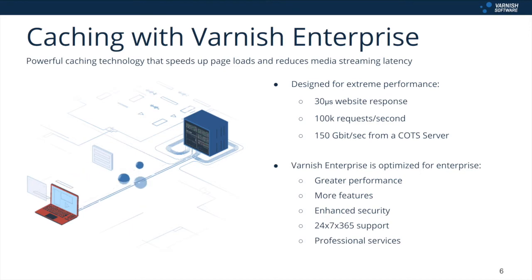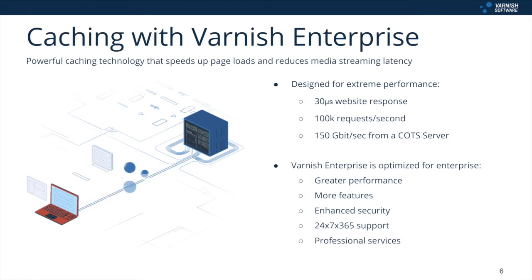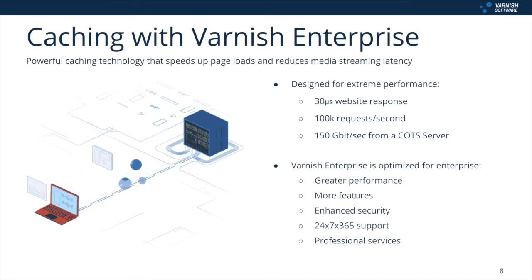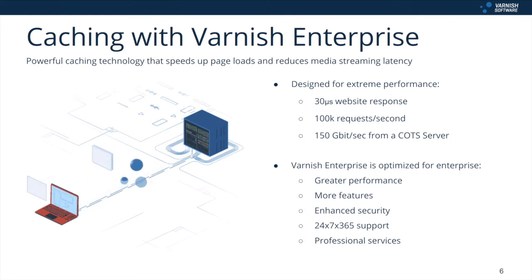Varnish Enterprise is designed for extreme performance — sub-millisecond response times, handling hundreds of thousands of requests per second, and being able to hit 150 gigabits per second throughput from a single off-the-shelf server. It's certainly the highest performing technology out there for content delivery, and certainly the most resource efficient.